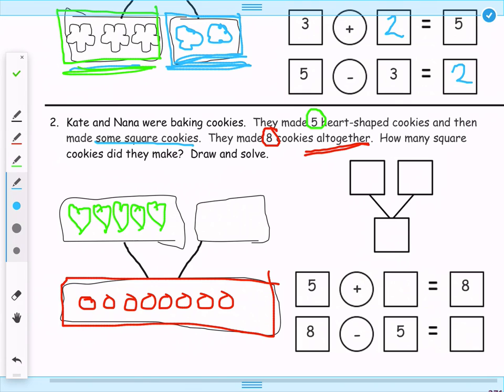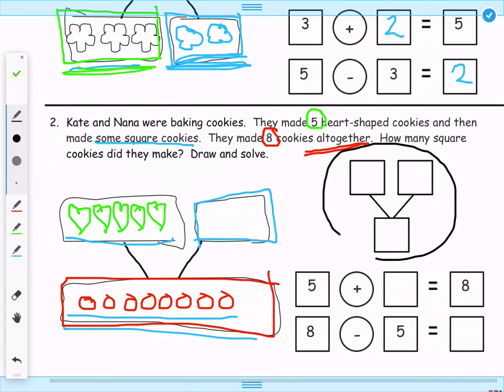Now, we know that of these 8 cookies down here, 5 of them are hearts and an unknown number are squares. So we need to count on from 5 until we get to 8. I'm going to go ahead and let you do that. Then you simply need to take these numbers and plug them in in our number bond over here.